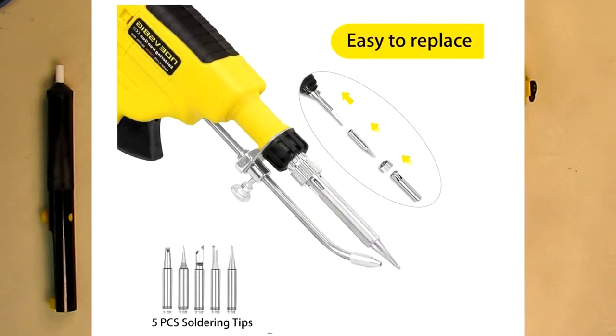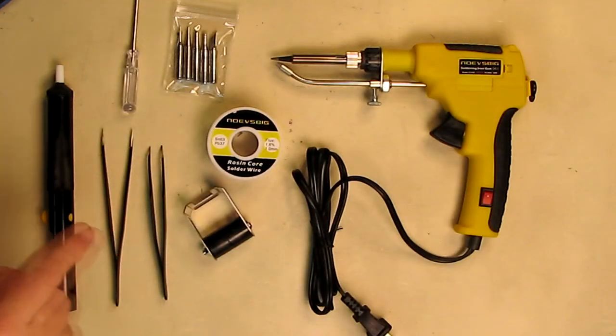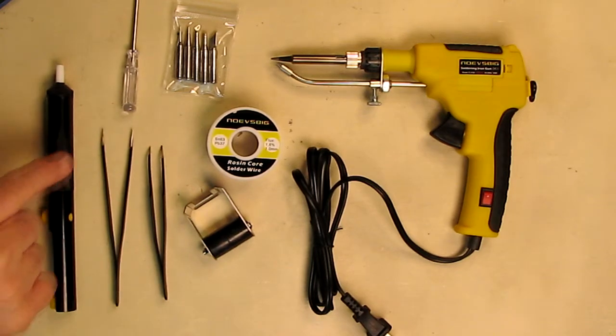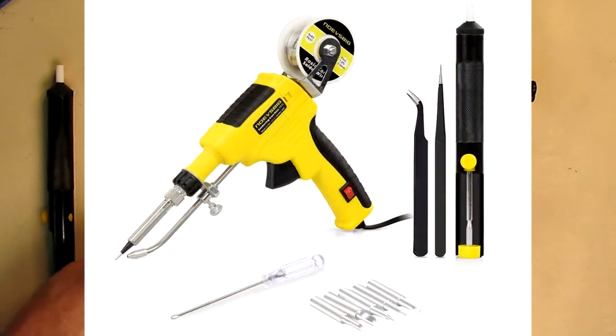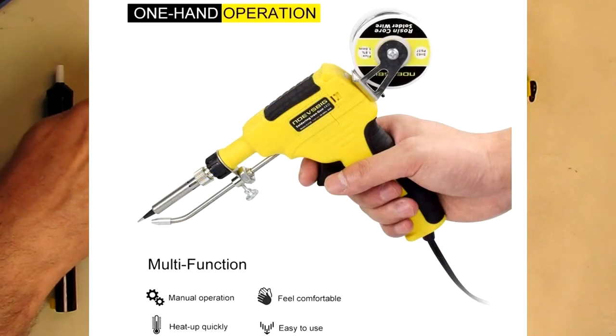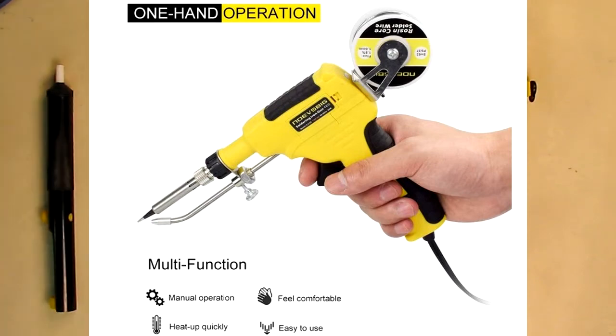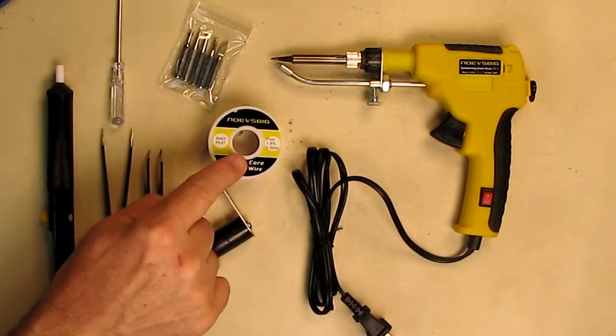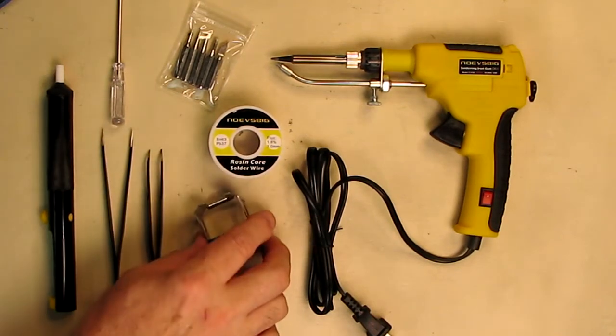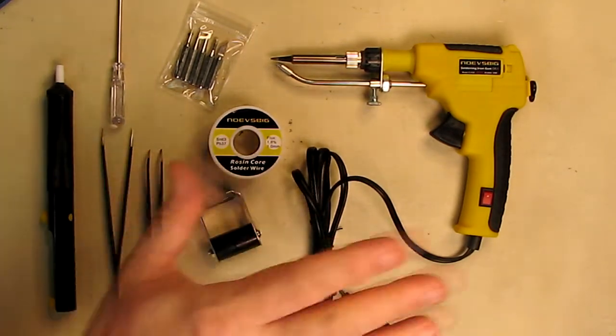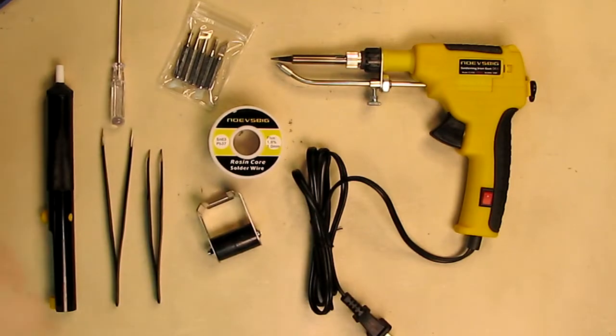It's a 60-watt soldering gun with five extra pieces. You've got your soldering sucker tool, an included screwdriver, two different precision grabbers for electronics, an additional five tips plus the tip that's on there, which is six, some nice one millimeter core rosin solder, and the solder holder.